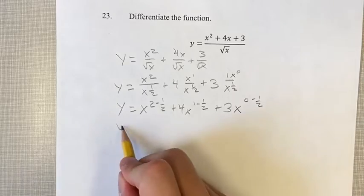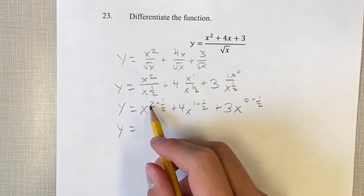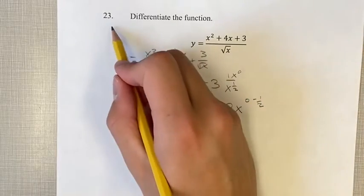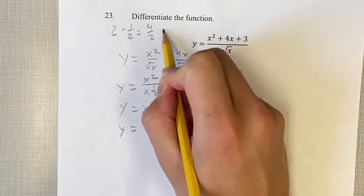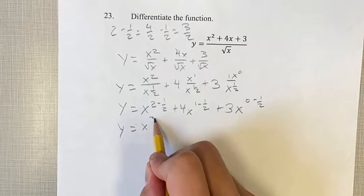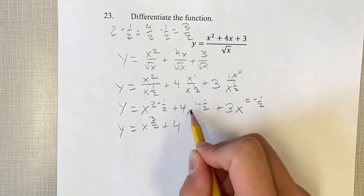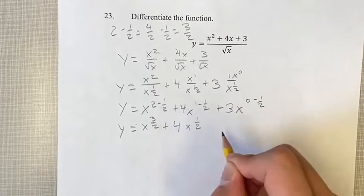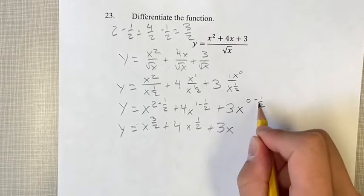This is something we can simplify. y equals x to the 2 minus 1 half equals 4 halves minus 1 half, which is 3 halves, plus 4, 1 minus 1 half is 1 half, plus 3x to the negative 1 half.